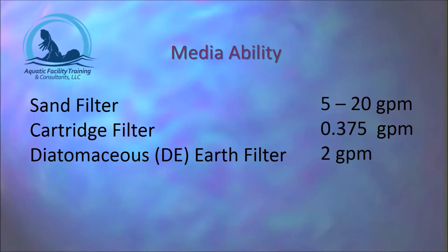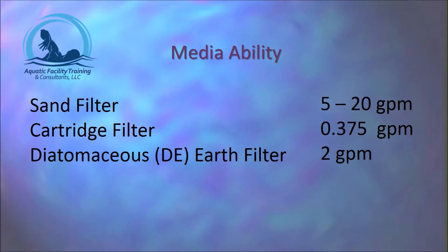Media ability is the amount of water a filter can handle per square foot of filter area, depending upon the exact media that is used. A sand filter has a media ability of 5 to 20 gallons per minute per square foot of filter area. A cartridge filter has a media ability of 0.375 gallons per minute per square foot. A diatomaceous earth filter, or DE filter, has a media ability of 2 gallons per minute per square foot of filter area.